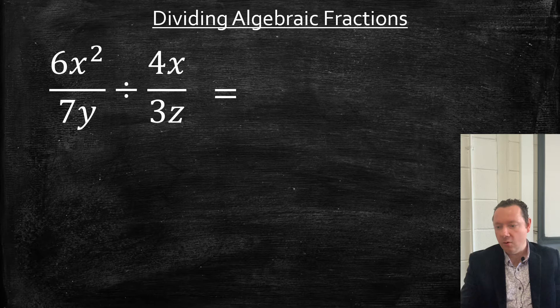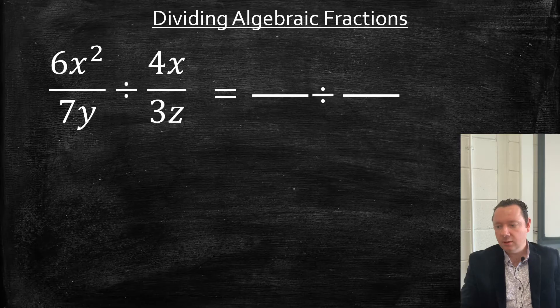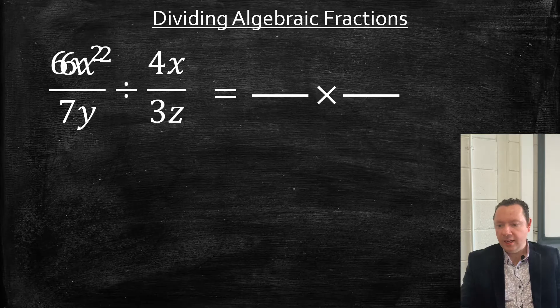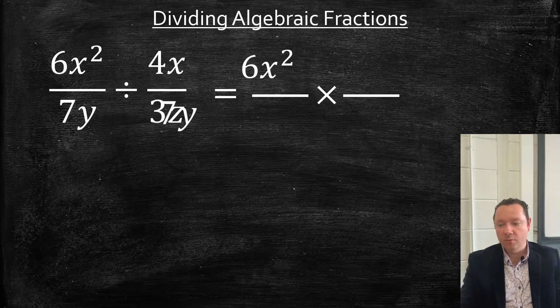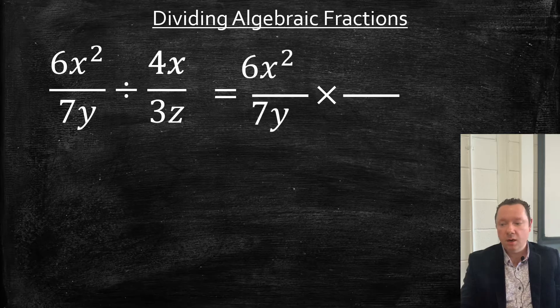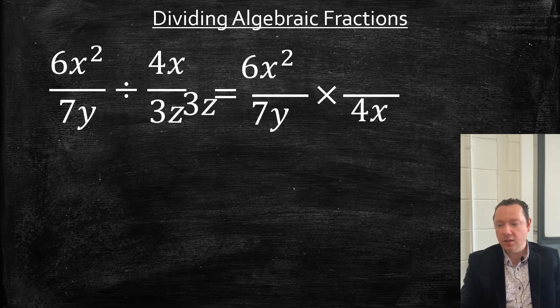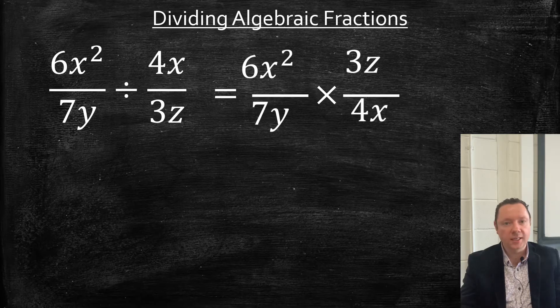So that equals, well, we're going to have our fractions still. First of all, our divide becomes our times. Our 6x² just goes in the place where it already was and so does our 7y. Not a problem there. But now our 4x goes on the bottom and our 3z goes on the top. It's turned upside down. It's a reciprocal.